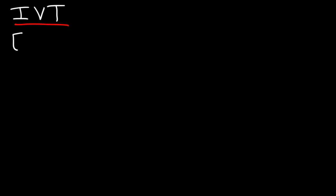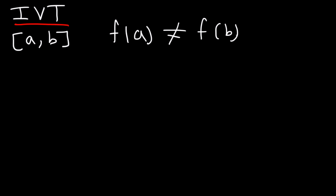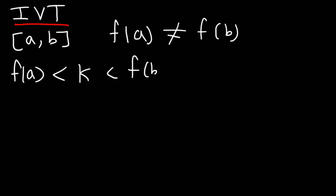Now let's talk about IVT, the Intermediate Value Theorem. The Intermediate Value Theorem states that if f is continuous on a closed interval a to b, and f of a does not equal f of b, and k is any number that's between f of a and f of b, then there's at least one number c on the interval a to b such that f of c is equal to k.